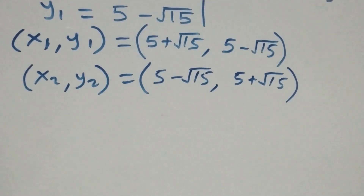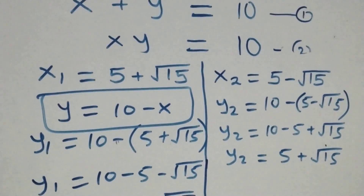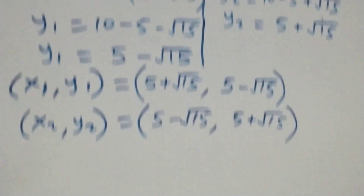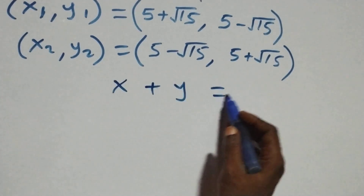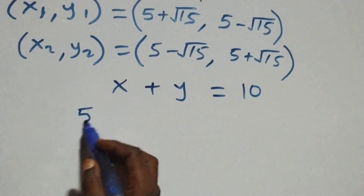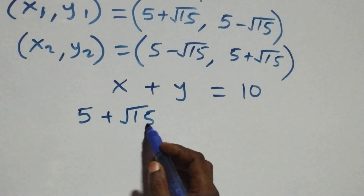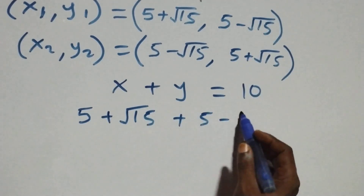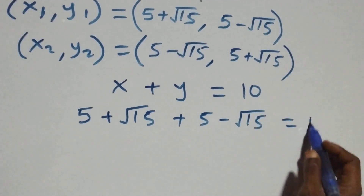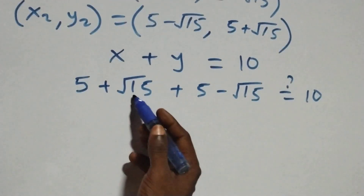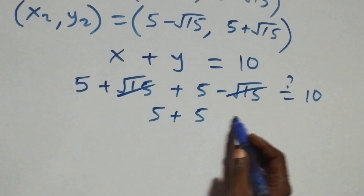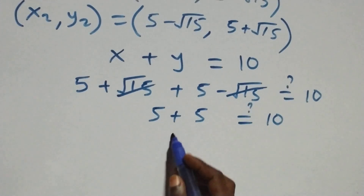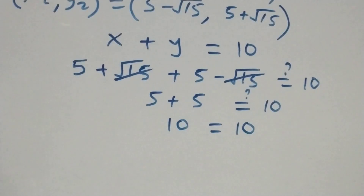For equation one, x plus y equals ten. Substituting the first solution: five plus root fifteen plus five minus root fifteen. The positive root fifteen and negative root fifteen cancel each other, leaving five plus five which equals ten — matching the right-hand side. So the left-hand side equals the right-hand side, and the solution satisfies equation one.